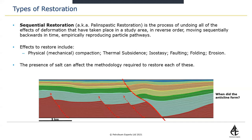Sequential restoration — sometimes called palinspastic restoration — is what we're focusing on today. In a sequential restoration, all processes that resulted in deformation are undone sequentially in reverse order. These include mechanical compaction and loss of porosity experienced by sediments as they're buried, thermal subsidence, isostatic subsidence, faulting, folding, and erosion. We'll be focusing on how the presence of salt in a model can affect the methodology needed to restore each of these processes.